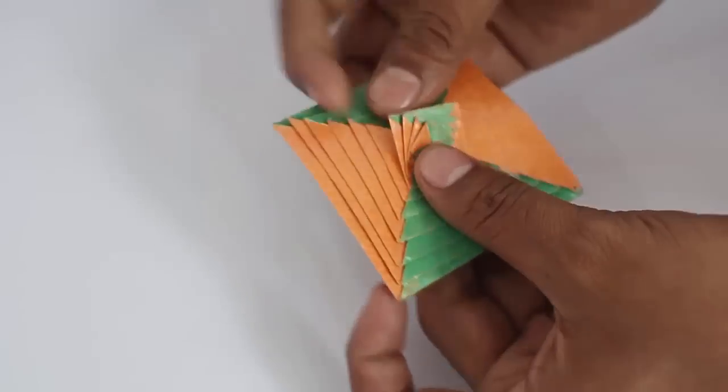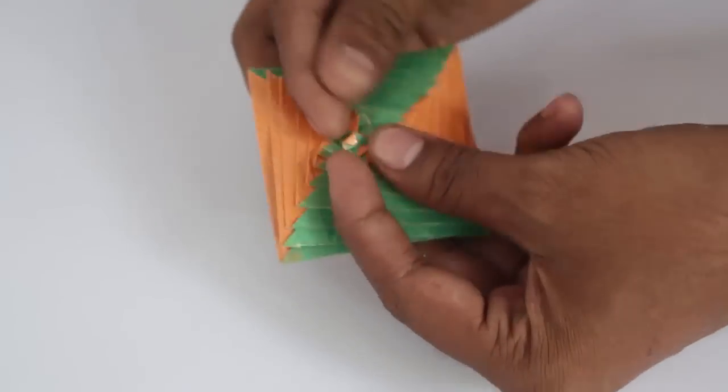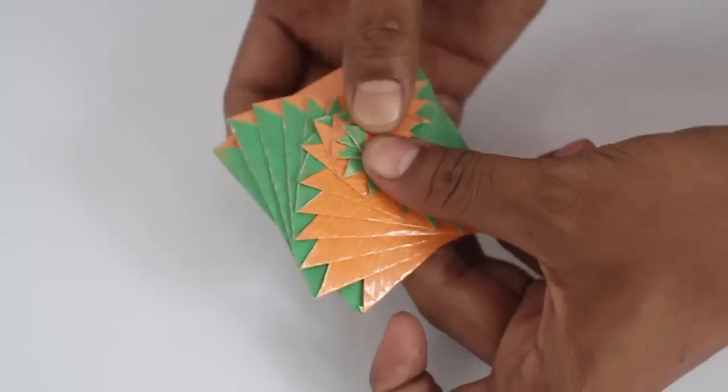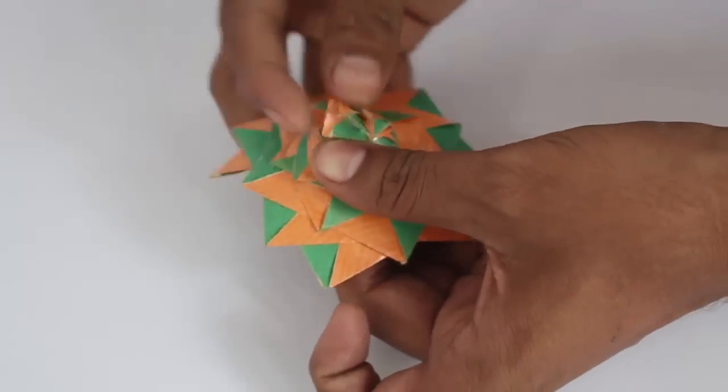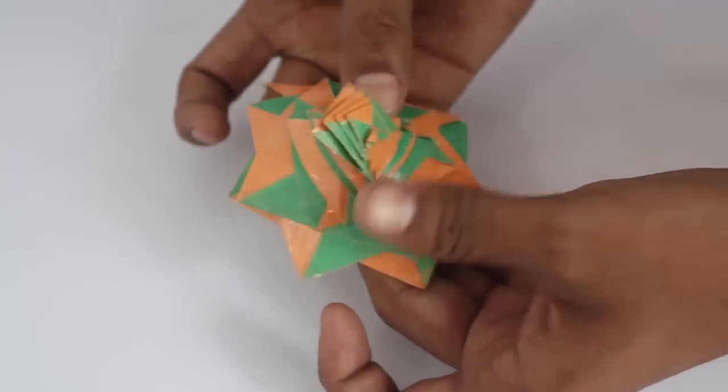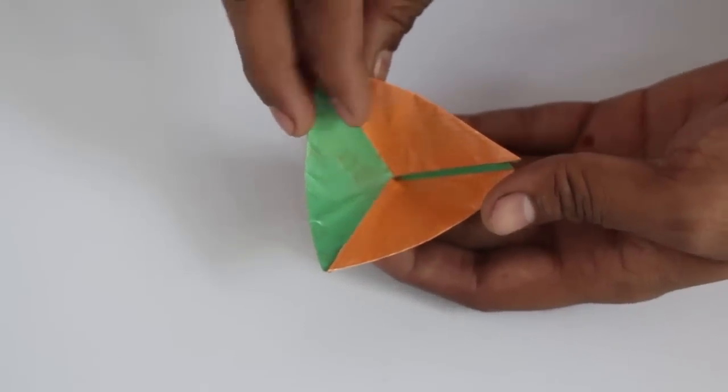Now this time once again you twist it, but this time you twist it in the opposite direction. And finally you will see a very colorful tetrahedron-like shape.